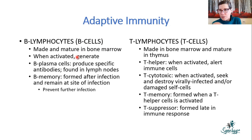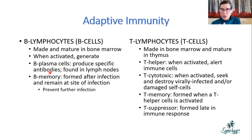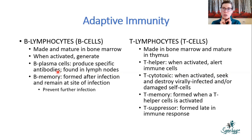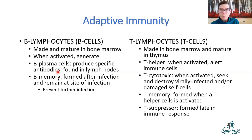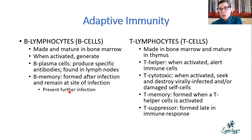When B cells are activated they become plasma cells, which produce antibodies, and they lodge in different lymph nodes. When you visit the doctor and don't feel well, they palpate along your collarbone, jaw area, and under your arms to check for swollen lymph nodes — swollen nodes mean you have lots of plasma cells producing lots of antibodies, indicating a bloodborne infection. You also retain memory by generating B memory cells that go to the site of infection and remain there to prevent further infection.